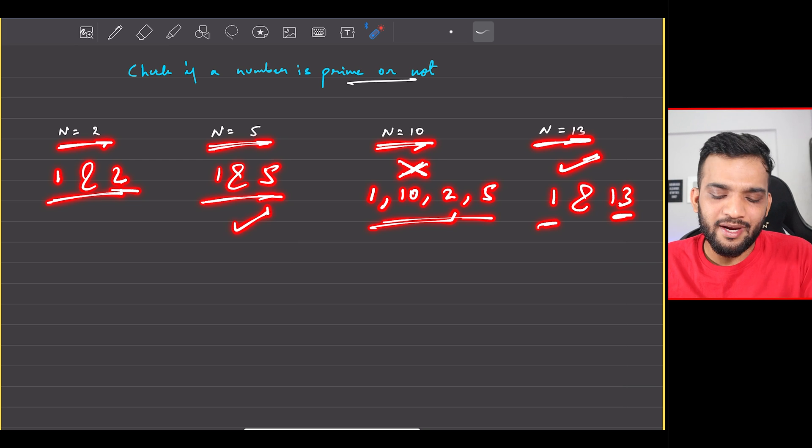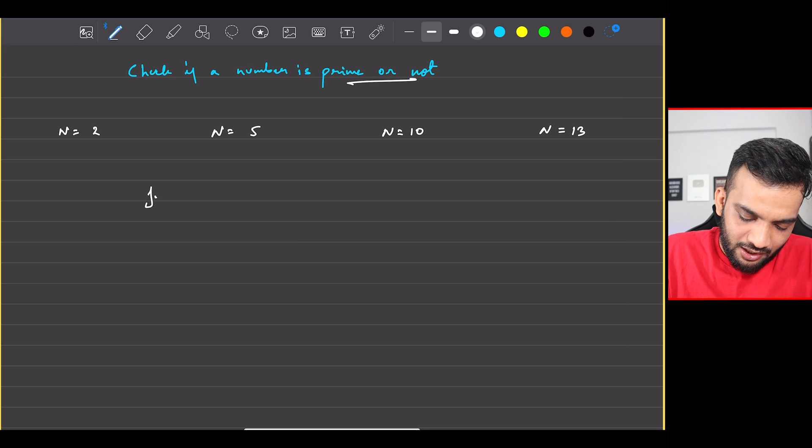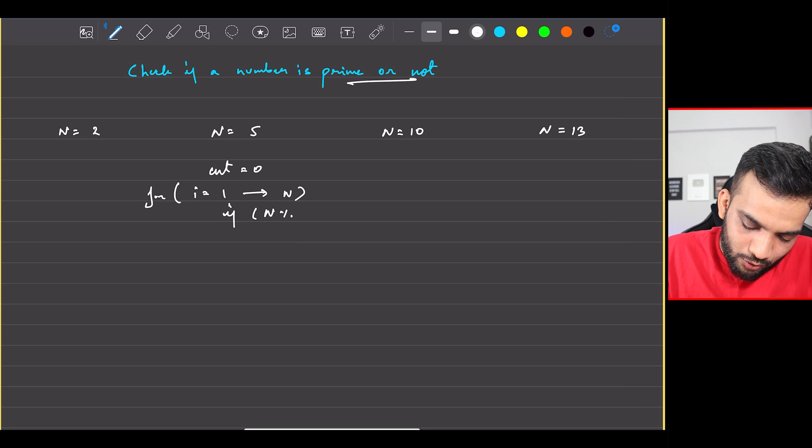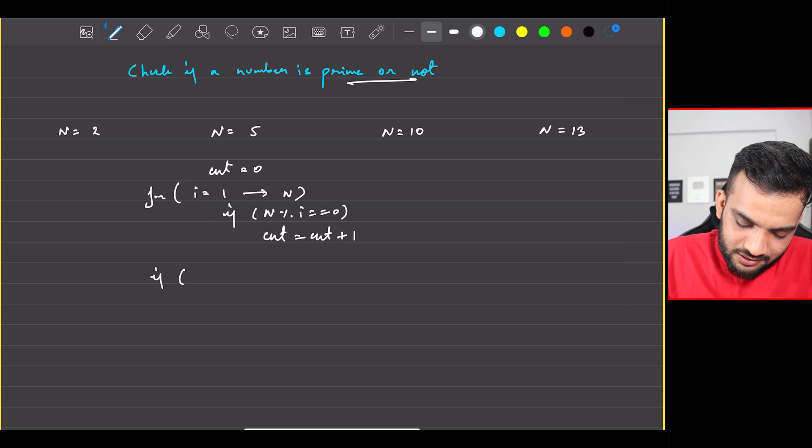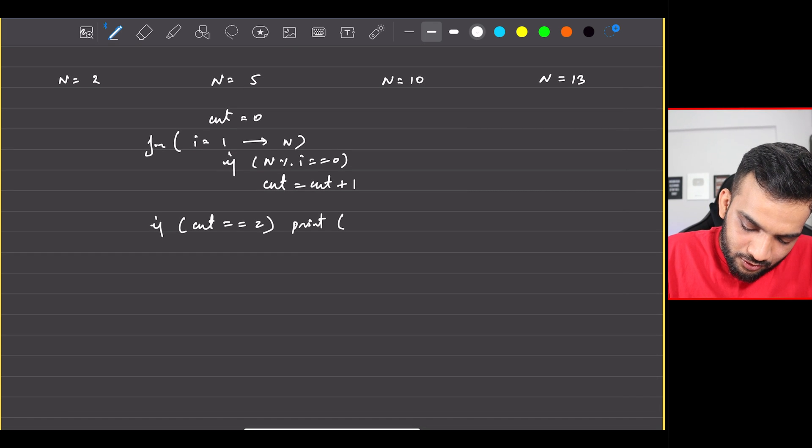The easiest way to do it is start looping from i equal to one and run the loop till n. Keep a counter equal to zero and say if n modulo i is zero, do counter equal to counter plus one. At the end, if counter is two, which means the number of divisors are two, print yes prime. Otherwise, print no, this is not a prime number. Simple and straightforward.